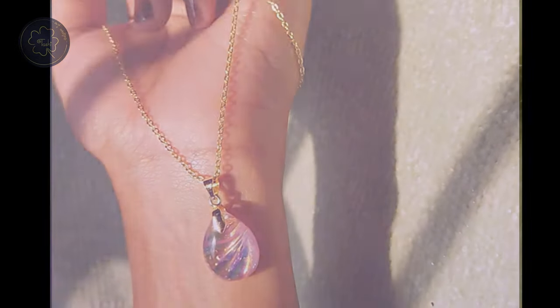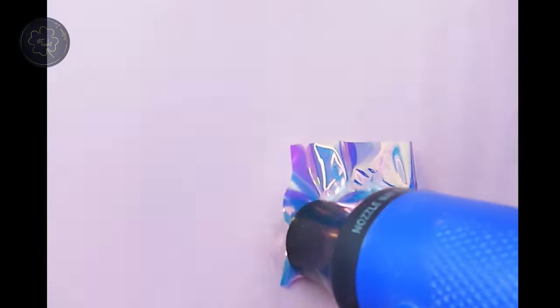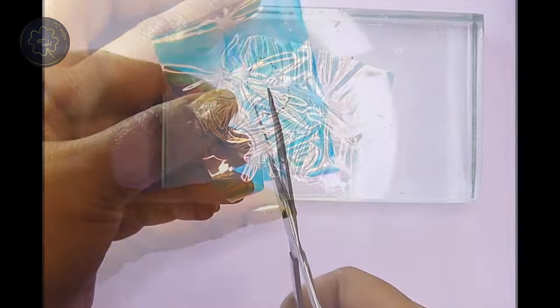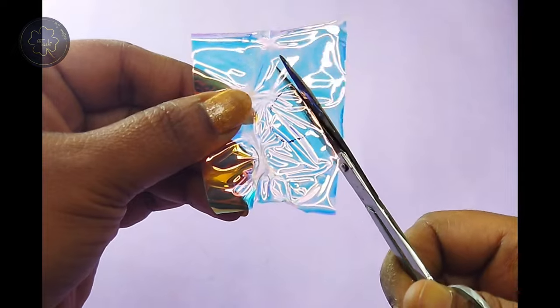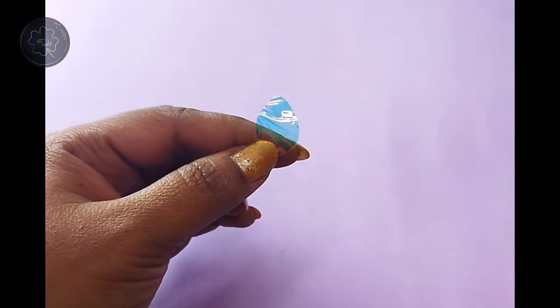First, take a piece of dichroic film and heat it until it wrinkles. Once it does, press it down with a heavy material to flatten it out. Now cut the dichroic film into whichever shape you prefer - it could be a heart, a circle, or any other shape you like.